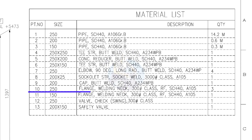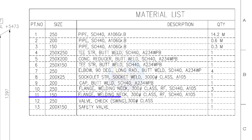Item number 10: 250 NB, 90-degree long radius — 150 NB weld neck flange, class 300 pound, raised face, schedule 40. Quantity: 3. Item number 11: 150 NB weld neck flange, class 300 pound, raised face, schedule 40. Quantity: 1.